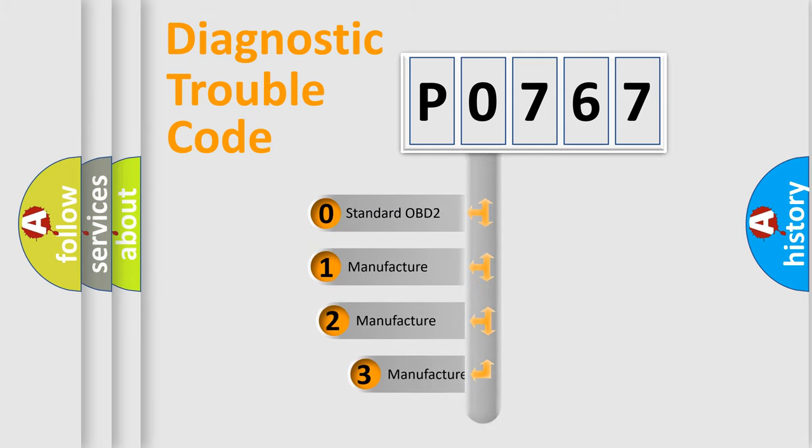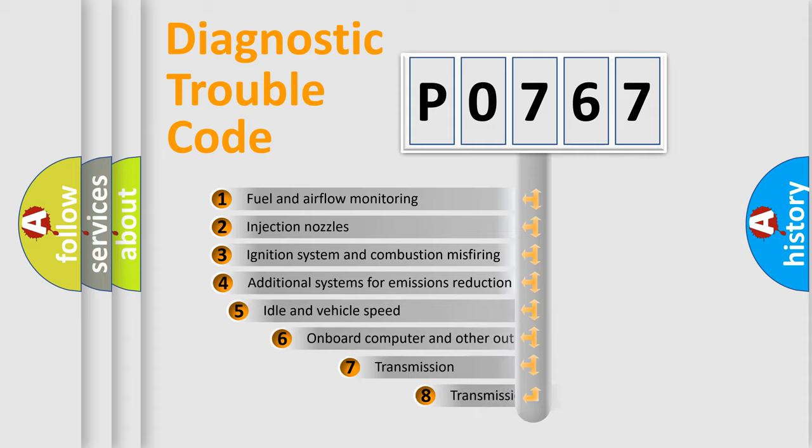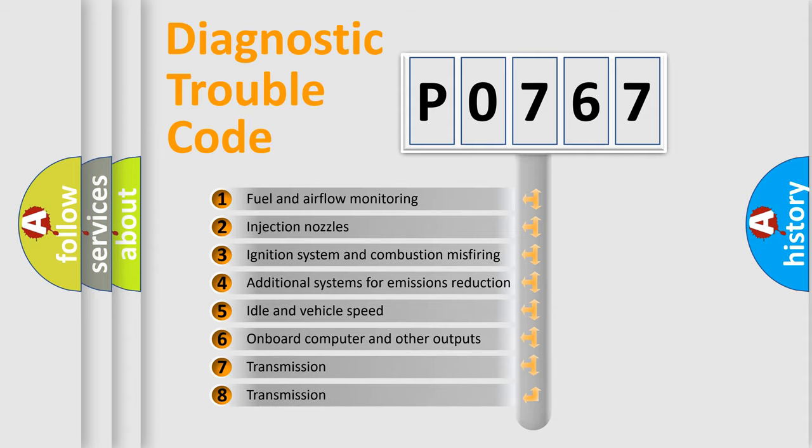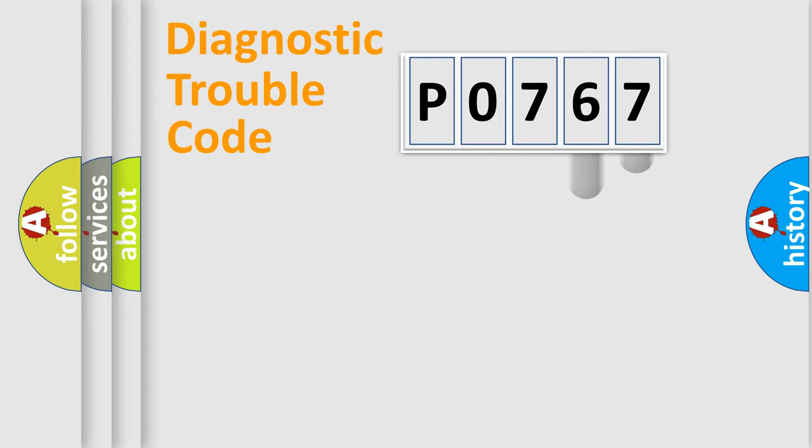This distribution is defined in the first character code. If the second character is expressed as zero, it is a standardized error. In the case of numbers 1, 2, or 3, it is a manufacturer-specific expression of the car-specific error. The third character specifies a subset of errors.